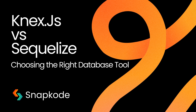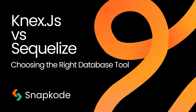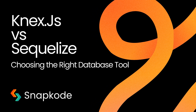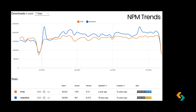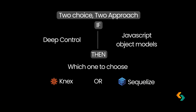Hello, Snapcode community. Ready to take your backend skills up a notch? Today, we're going deep into two popular tools for database management in JavaScript, Knex.js and Sequelize. You'll discover not just what they do, but how they do it, and what that means for your projects. By the end of this video, you'll feel equipped to pick the best tool for any project, whether you need custom SQL control or prefer to work in a more object-oriented world. Let's jump right in.